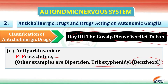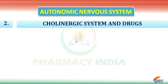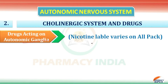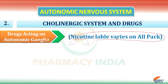Now we are going to discuss drugs acting on autonomic ganglia. Here we have another trick mnemonic: 'Nicotine label varies on all packs' — meaning the pair label of nicotine varies on all packs.